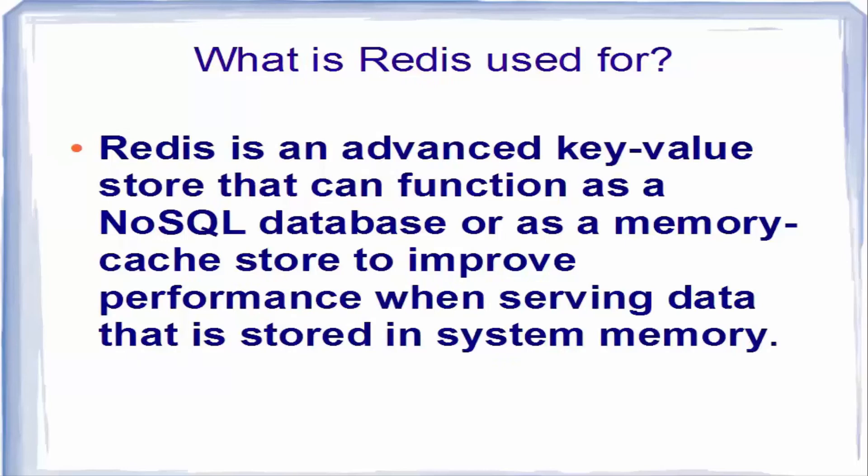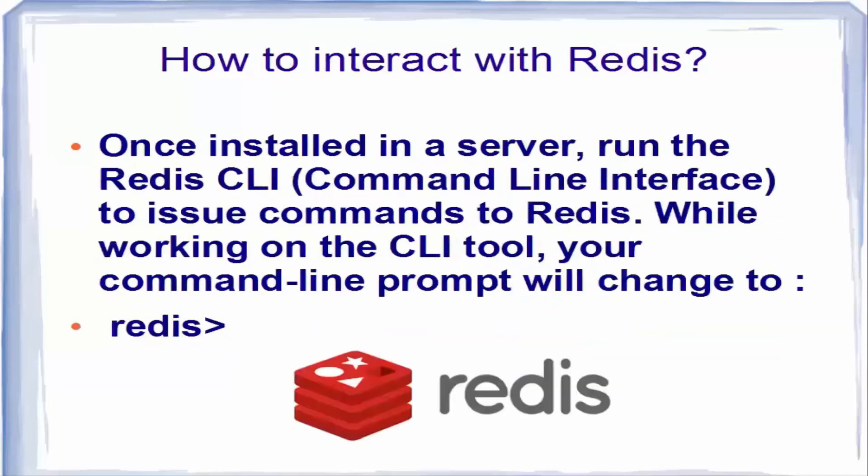Redis is used as an advanced key-value store that can function as a NoSQL database or as a memory cache store to improve performance when serving data stored in system memory. It can also be used as a message broker, in place of caching systems such as Memcached.